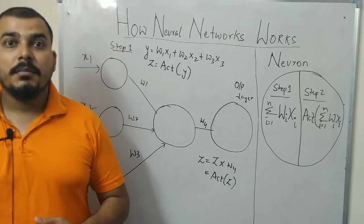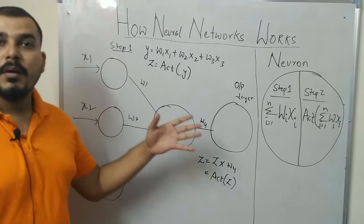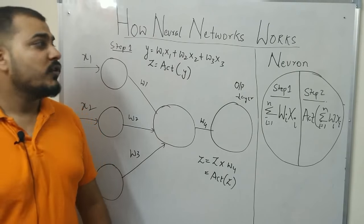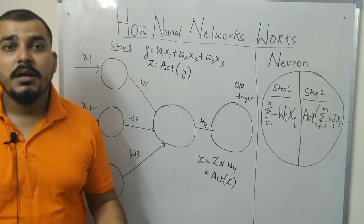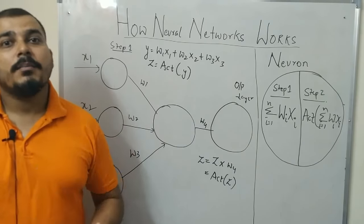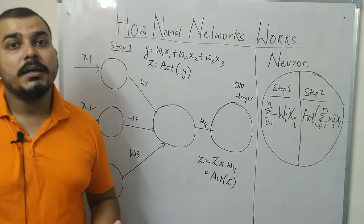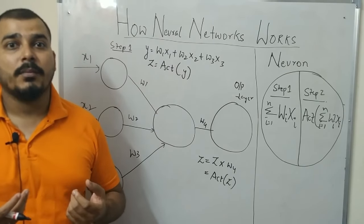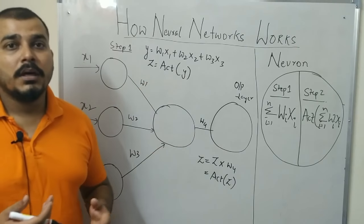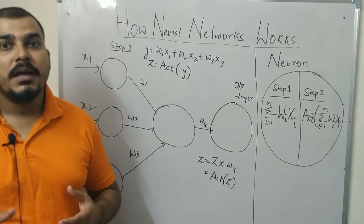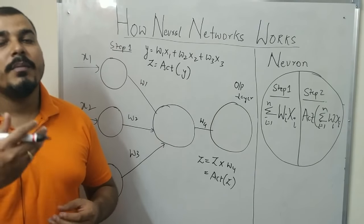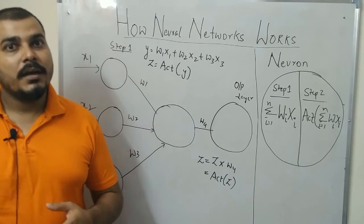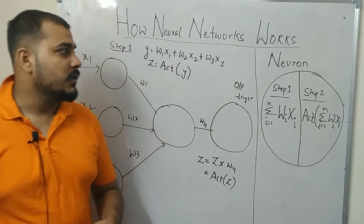This particular video will be in many parts because I have to explain forward propagation — what happens in forward propagation — and then I have to discuss what is an activation function, and after that what happens in back propagation and what are the key terms like cost function and loss function involved in back propagation. So this will be part one about how a neural network works, and there will be multiple parts as we go ahead with this deep learning playlist.